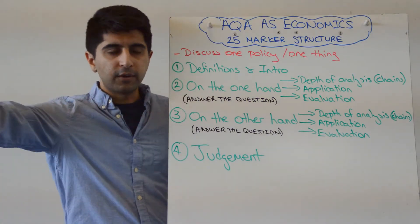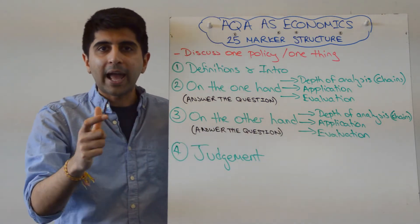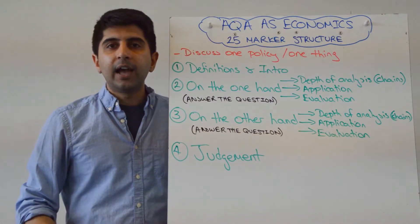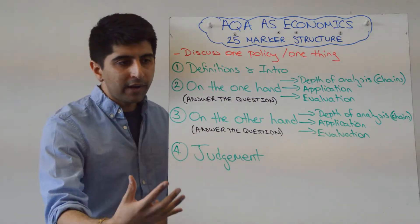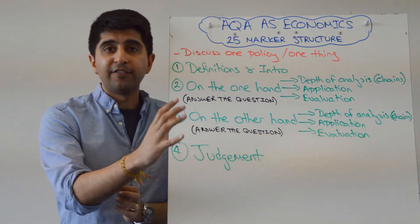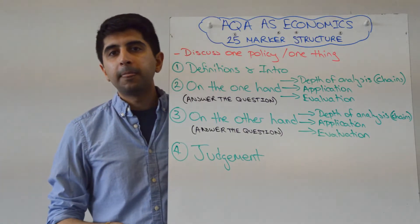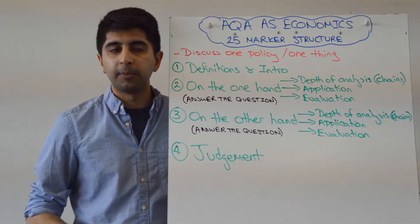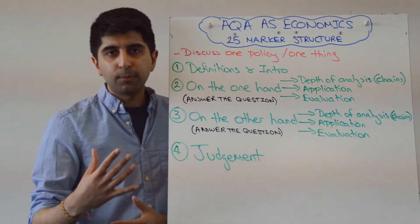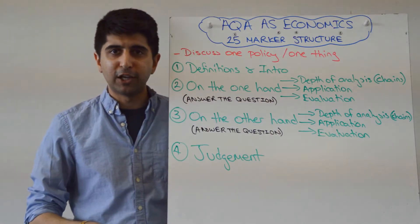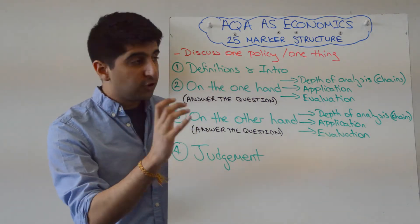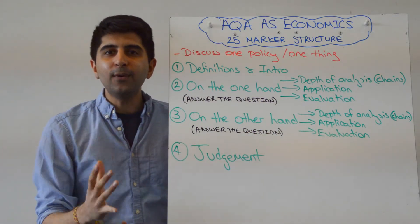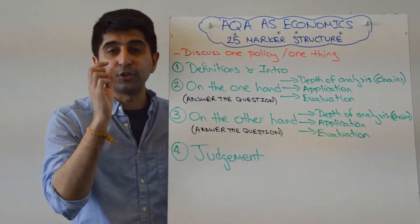Then, no messing around — straight into answering the question on the one hand. So on the one hand, let me answer the question. For example: discuss whether indirect tax is the most effective way of reducing the consumption of sugary drinks — on the one hand, here's why indirect tax is a very good policy. Or: discuss whether greater exports than imports will always improve UK macroeconomic performance — on the one hand, here's how greater exports than imports are likely to benefit UK macroeconomic performance. You answer the question on the one hand in serious depth. Remember these chains of analysis? AQA love these chains — they keep using it in their mark schemes all the time.